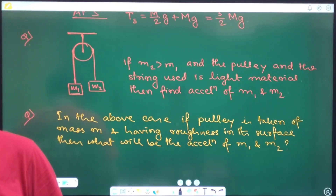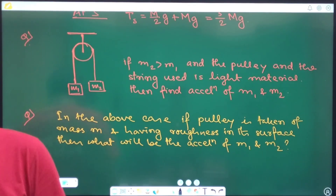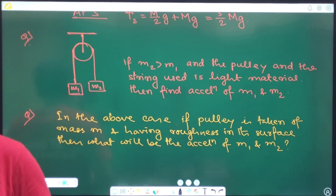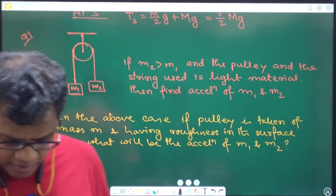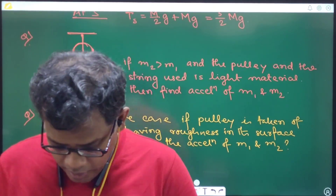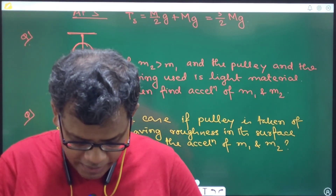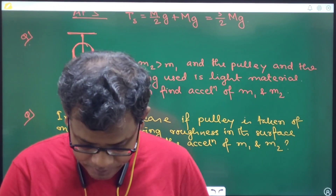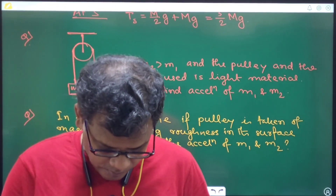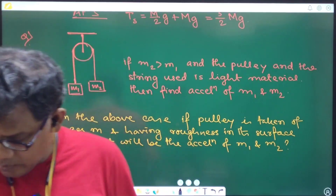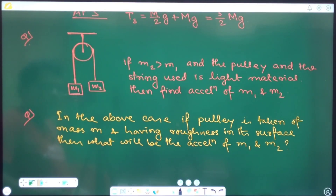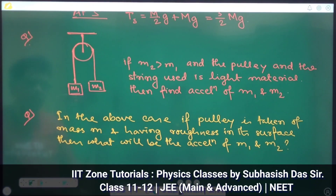With the same arrangement and same masses, will there be any change in the acceleration value or will it remain the same? Yes, of course there will be a change in acceleration. But the pulley is not participating in translational motion — so how does this stationary pulley influence the acceleration of M1 and M2?